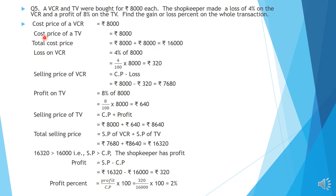Loss on VCR is 4% of 8,000: 4 by 100 into 8,000. Two zeros cancel, leaving 4 into 80 equals Rs. 320. Selling price of VCR equals CP minus loss: Rs. 8,000 minus Rs. 320 equals Rs. 7,680.